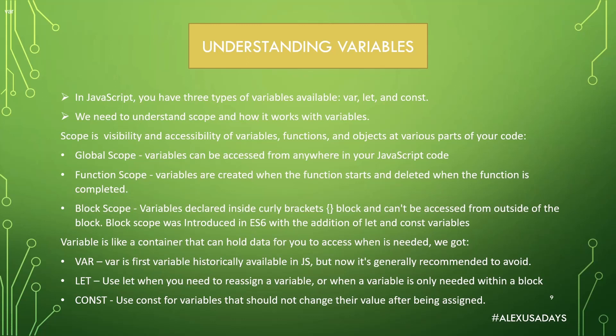In JavaScript you have three types of variables available: var, let, and const. We need to understand scope and how it works with variables. Scope is the visibility and accessibility of variables, functions, and objects at various parts of your code.